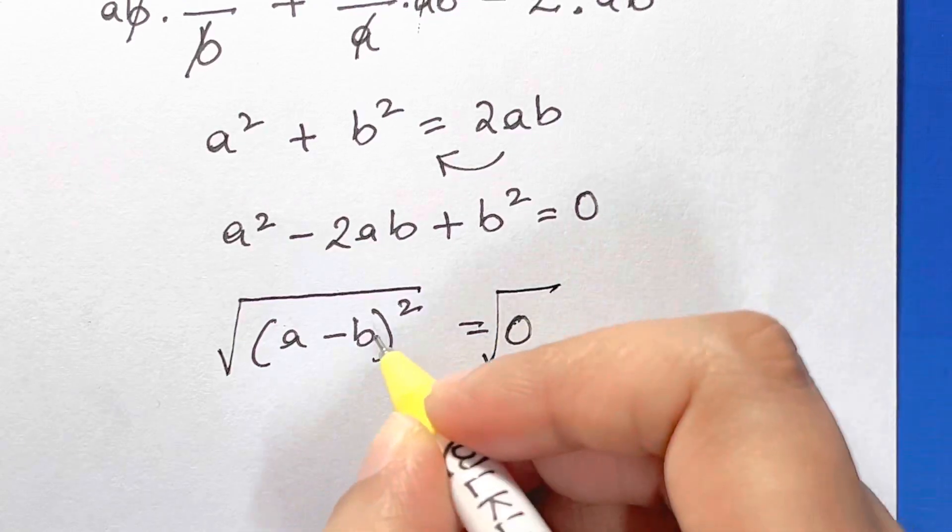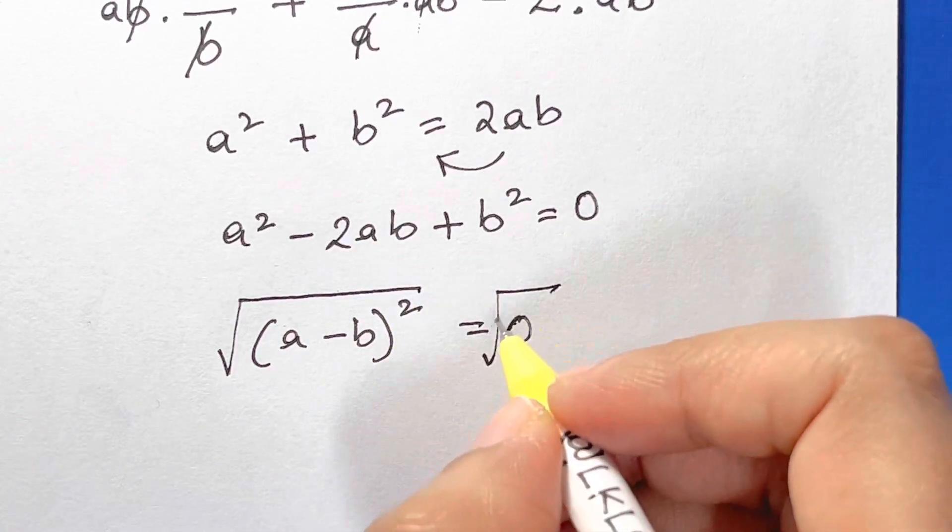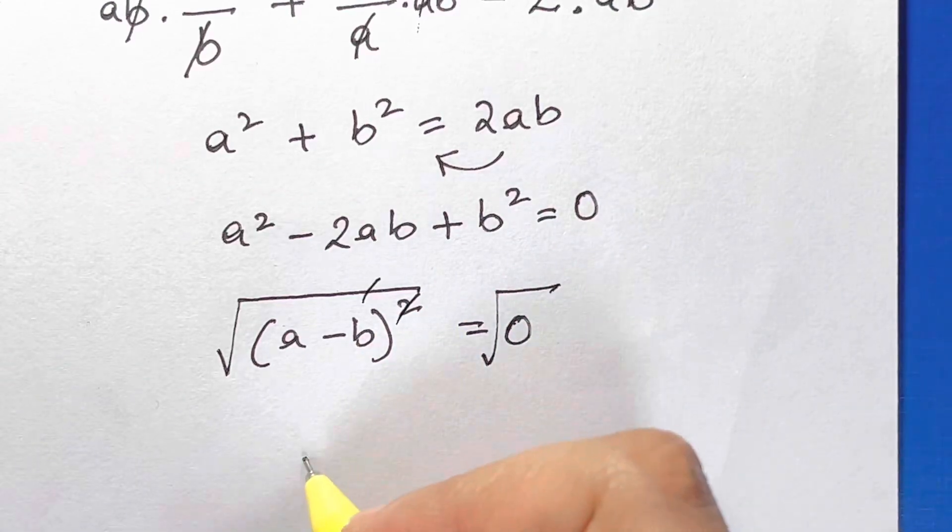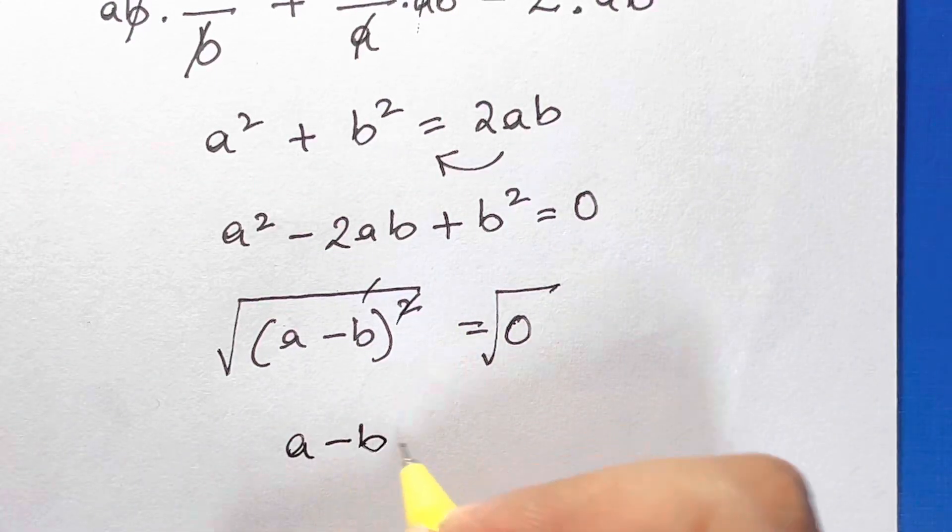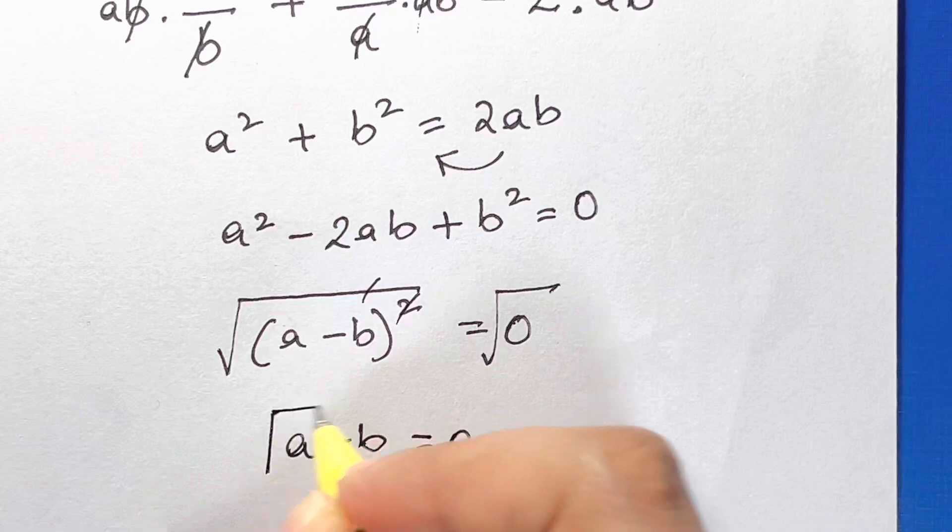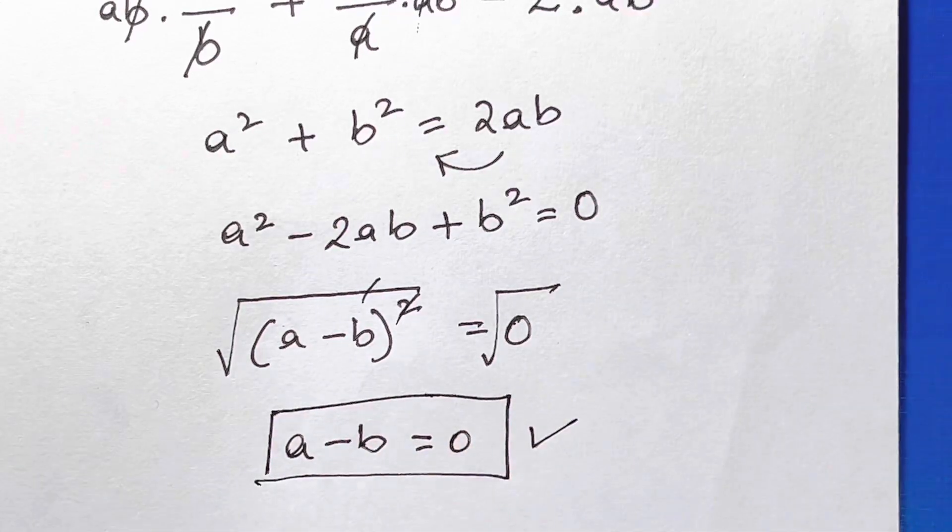If I want to remove the square, I've just put the square root. Square root and square gets cancelled, so I'm left with a minus b is equal to 0, and that's my answer. That's it, that's what we had to find out. a minus b which is 0.